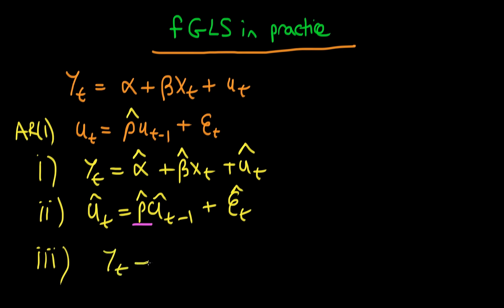So the idea here is that we take Yt and then we take rho hat times Yt minus one from that, which yields on the right hand side alpha times one minus rho hat plus beta times Xt minus rho hat times Xt minus one, and then the residuals is essentially we get Et hat here on the right hand side. So we've done away with the serial correlation. So in principle this Et hat here should be serially uncorrelated.